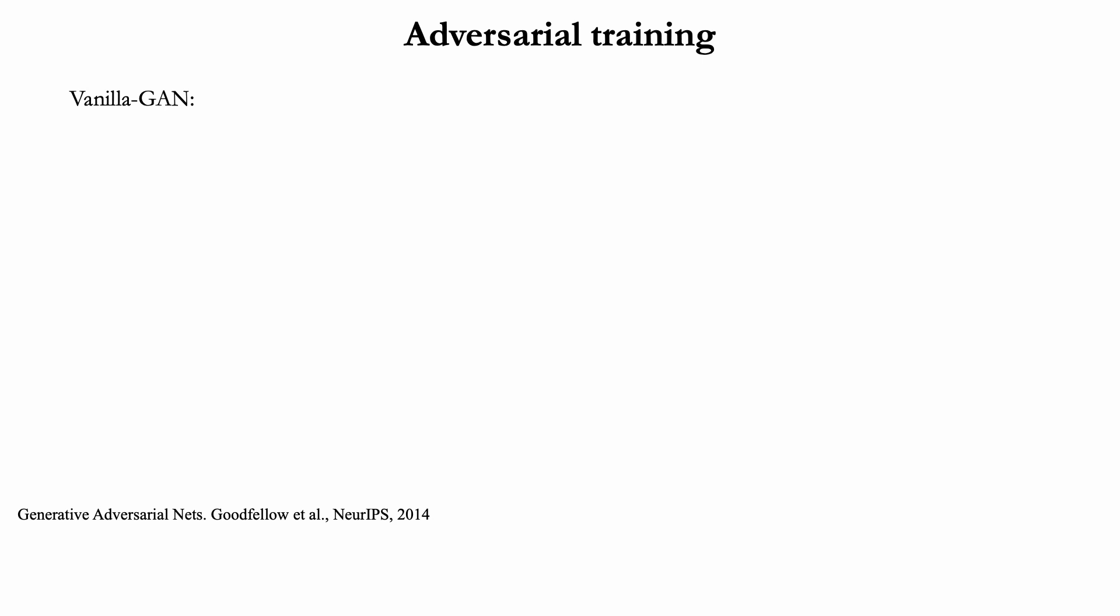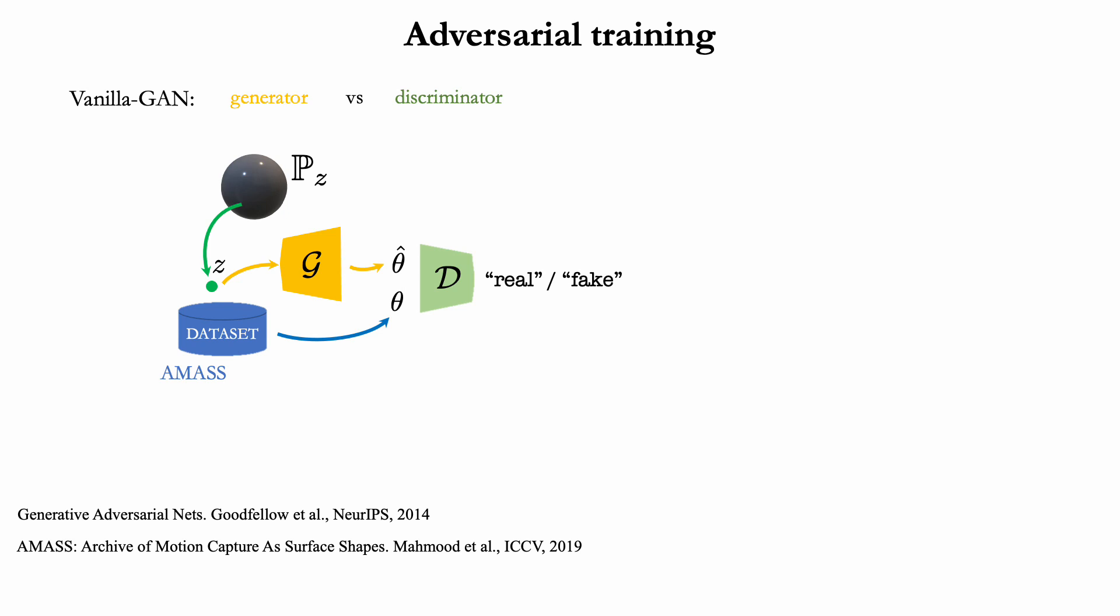Our model is learned by adversarial training. Random vectors sampled from a prior distribution are fed to the trainable generative model that produces synthetic SMPL poses, which are then compared to real poses from a large database. Both real and synthetic poses are fed to a discriminator model that must decide whether an input pose is real or not.